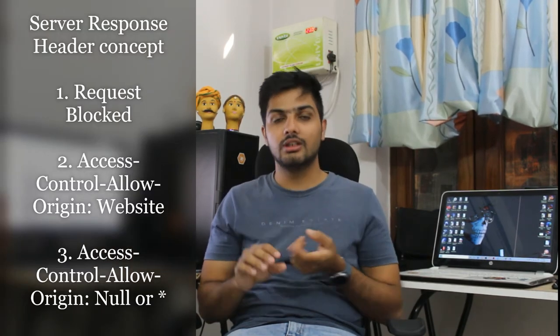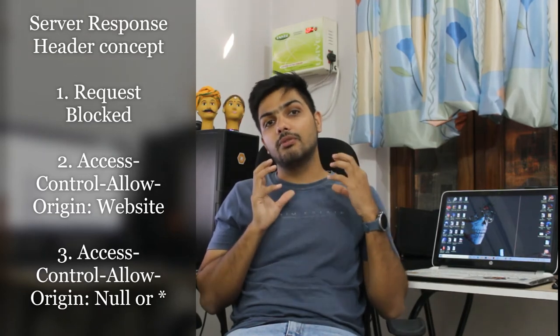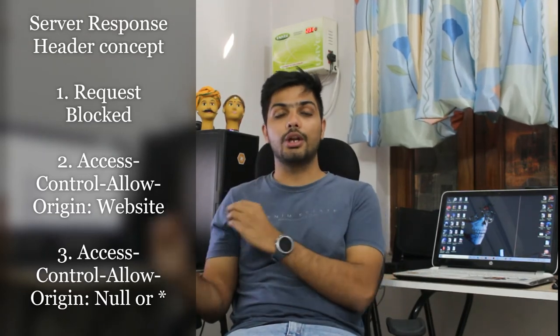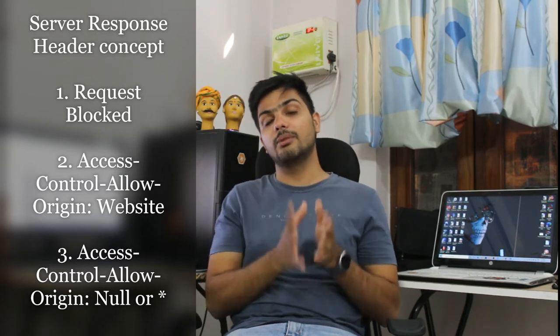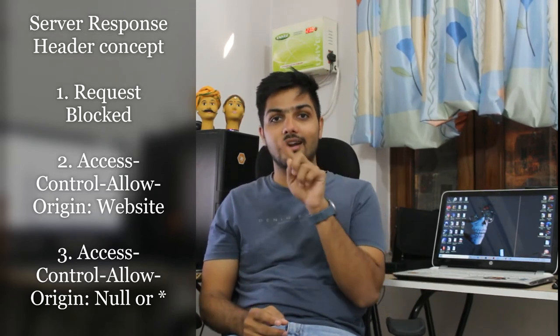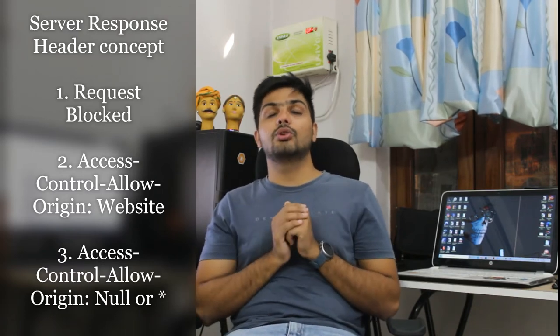After this, there are three possible scenarios in which a server would respond to you. One is that you would not get access — the request would be blocked. Another is that you would get an Access-Control-Allow-Origin header containing the origin or the host name. And the third method would be if you get a wildcard star or null value. These are the three ways you would get a response from the server.